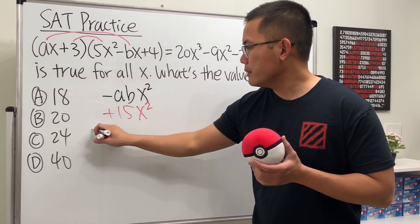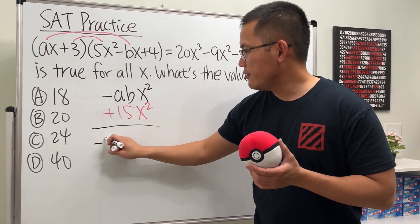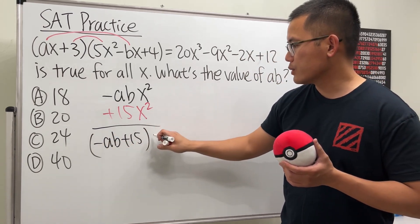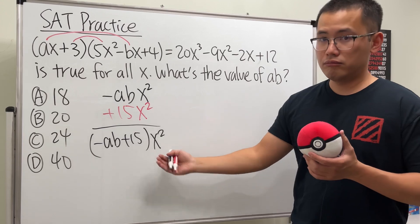And, of course, we can combine them. We will get negative ab, plus 15. And then, again, combine the terms. So, that means we can put the x squared on the outside, like this.